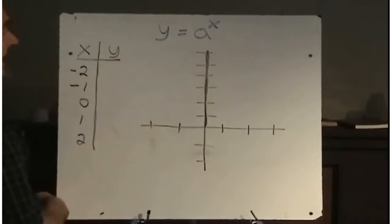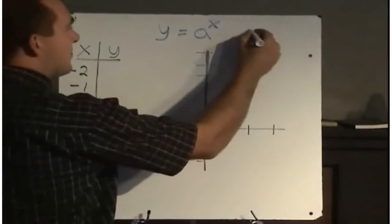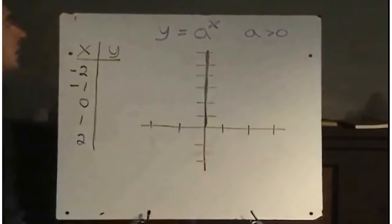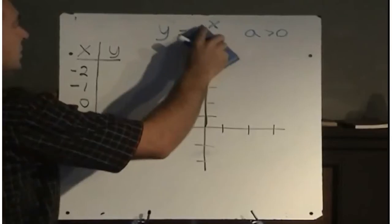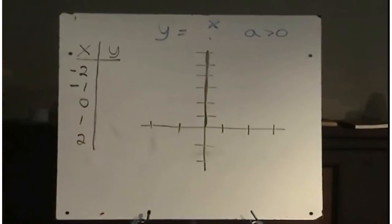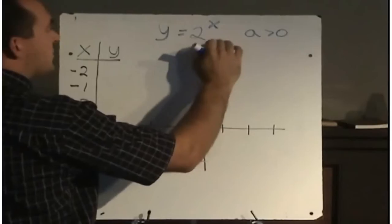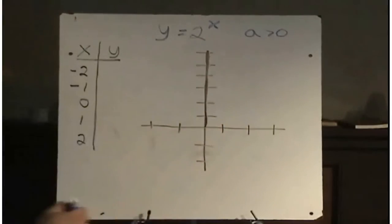Where a, this number a, is some number that's greater than zero. So let's consider the example y equals, let's pick a number, let's say 2. And we'll graph this simple basic exponential graph y equals 2 to the power of x.